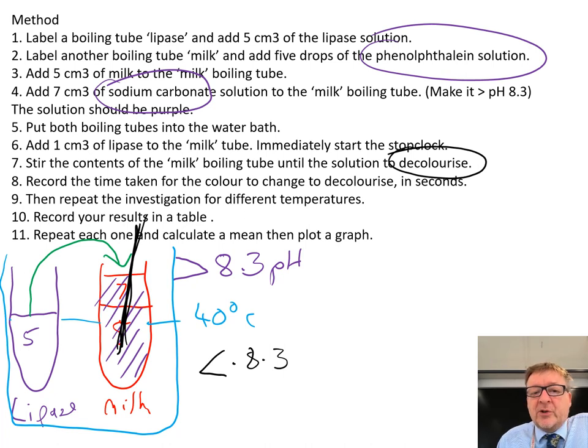Repeat the investigation for different temperatures—you might do 30, 40, 50, 60, 70, 20. Record your results in a table. The best way to continue this experiment is to repeat each one, maybe do each one three times, calculate a mean, and then plot a graph.